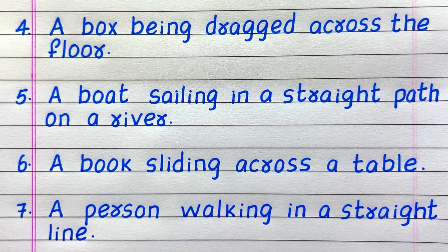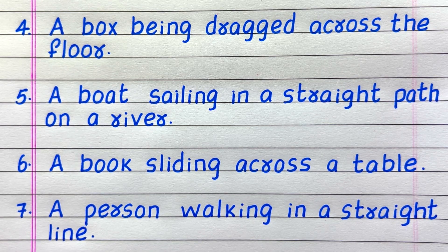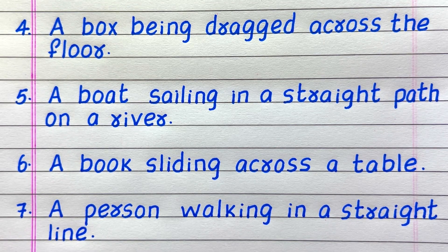Fourth example of translatory motion is a box being dragged across the floor. Fifth, a boat sailing in a straight path on a river. Sixth, a book sliding across the table. Seventh, a person walking in a straight line.